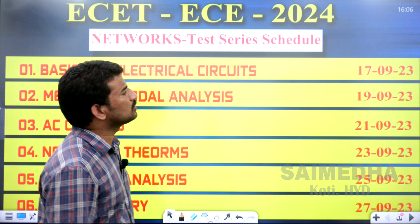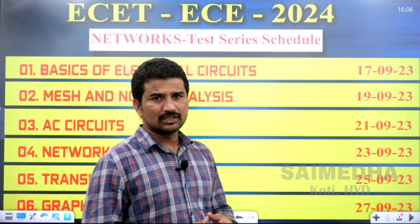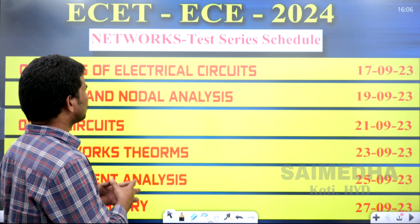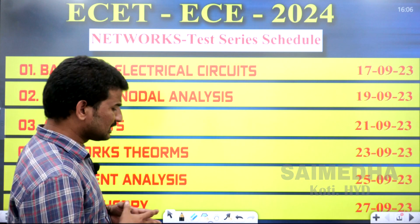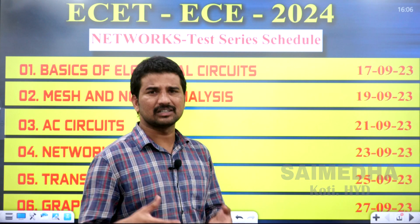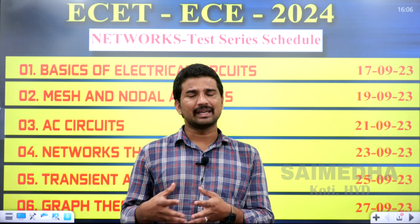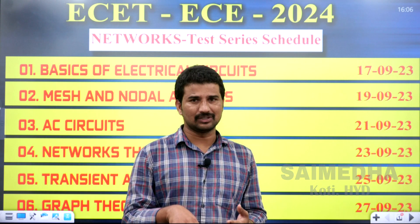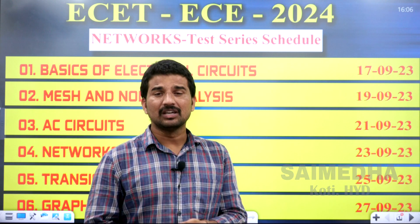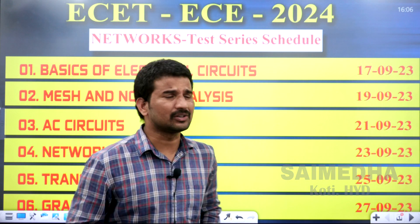This schedule is going to start from the 17th of September. On the 17th of September we are going to start from the basics of the electrical cycle — basically elements like resistor, inductor, capacitor, voltage, current, power, energy, equations, active elements, passive elements, unilateral, bilateral, etc.